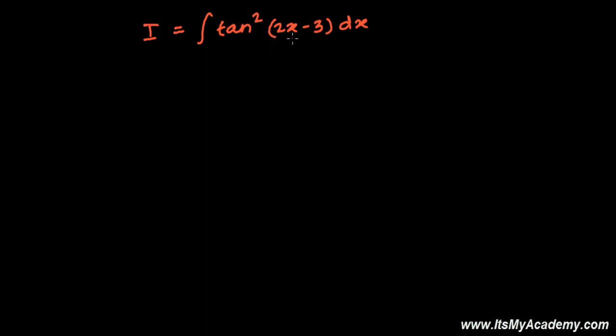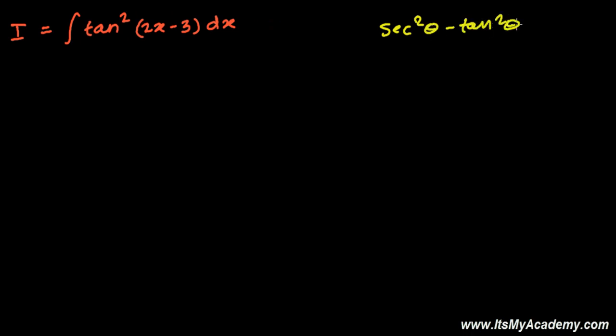As I told you sec square 2x minus 3, so we have a formula. If you remember the trig formula that is sec square theta minus tan square theta equals to 1. So here what we can say, sec square theta minus 1 equals to tan square theta. So what I can do here, tan square theta I can write in this format.